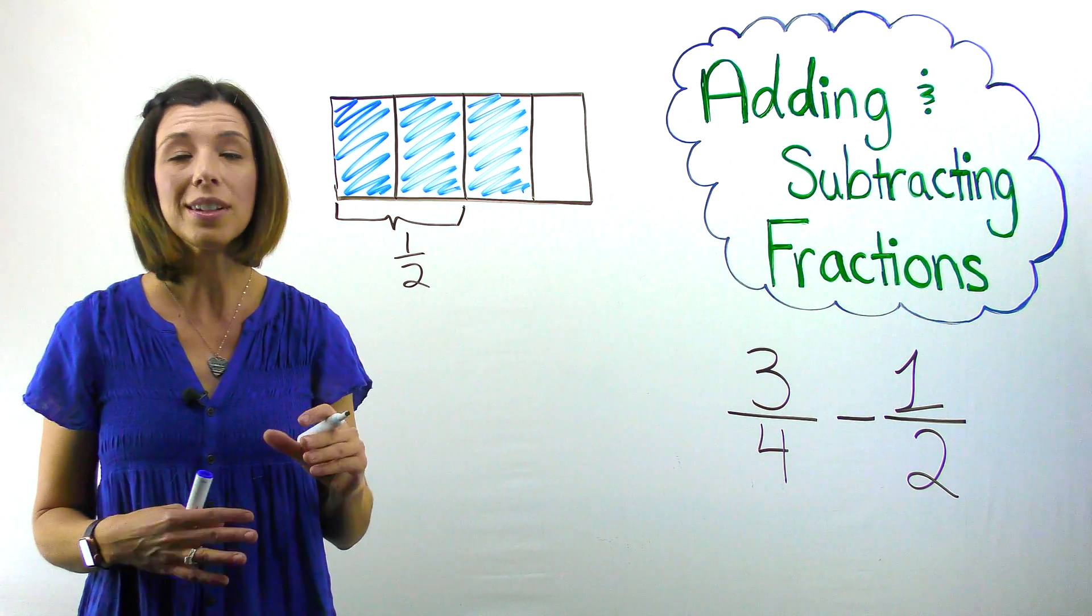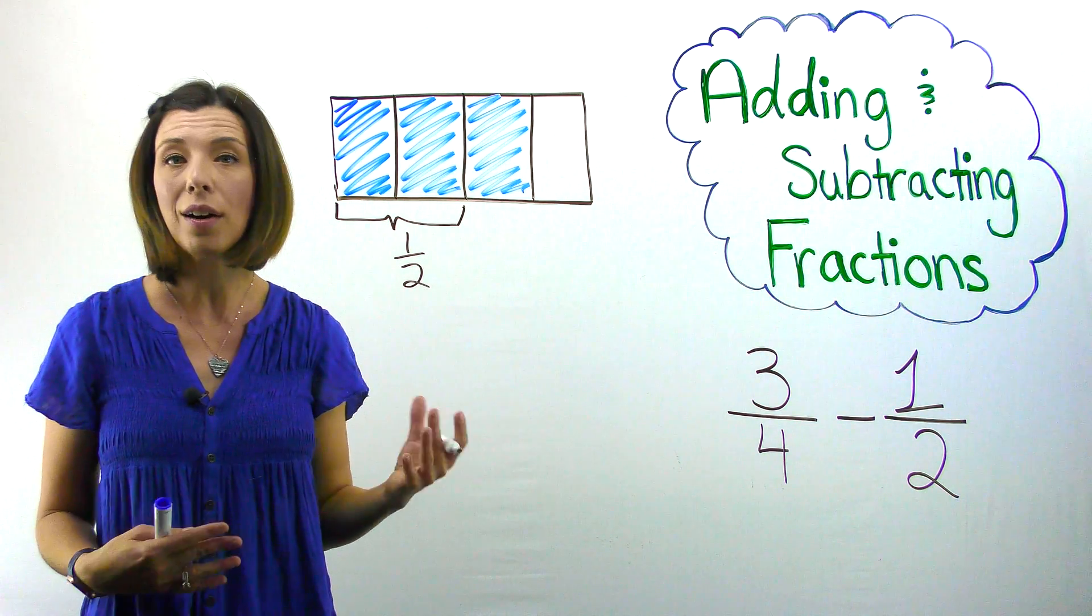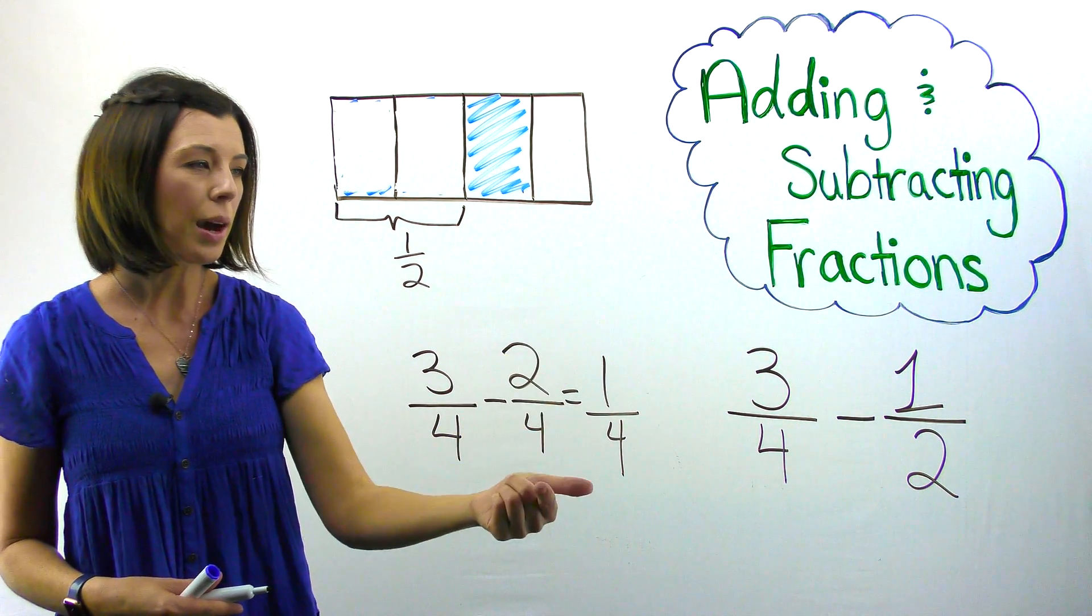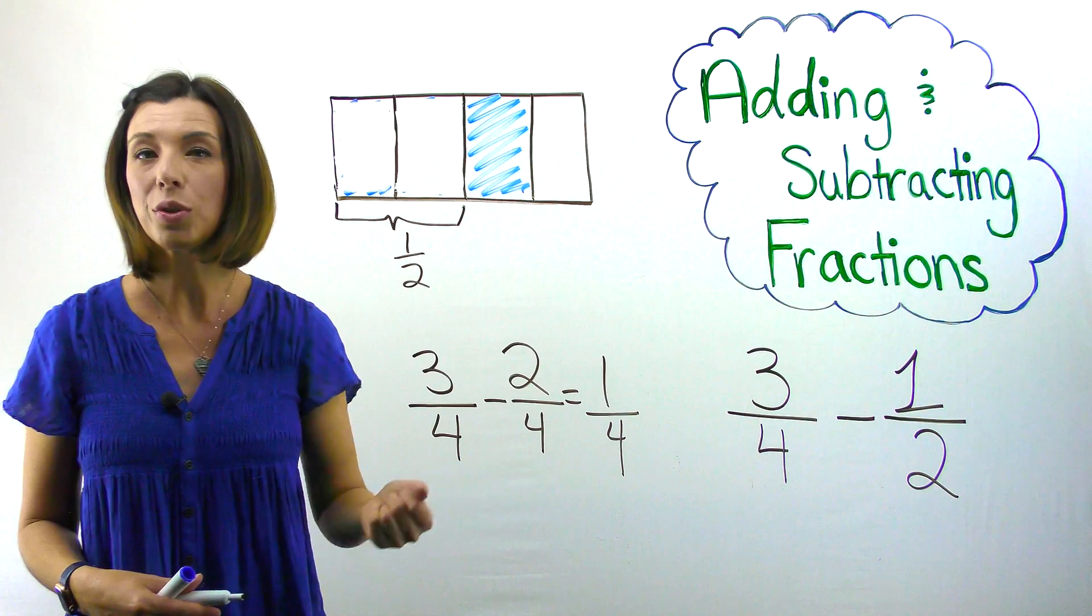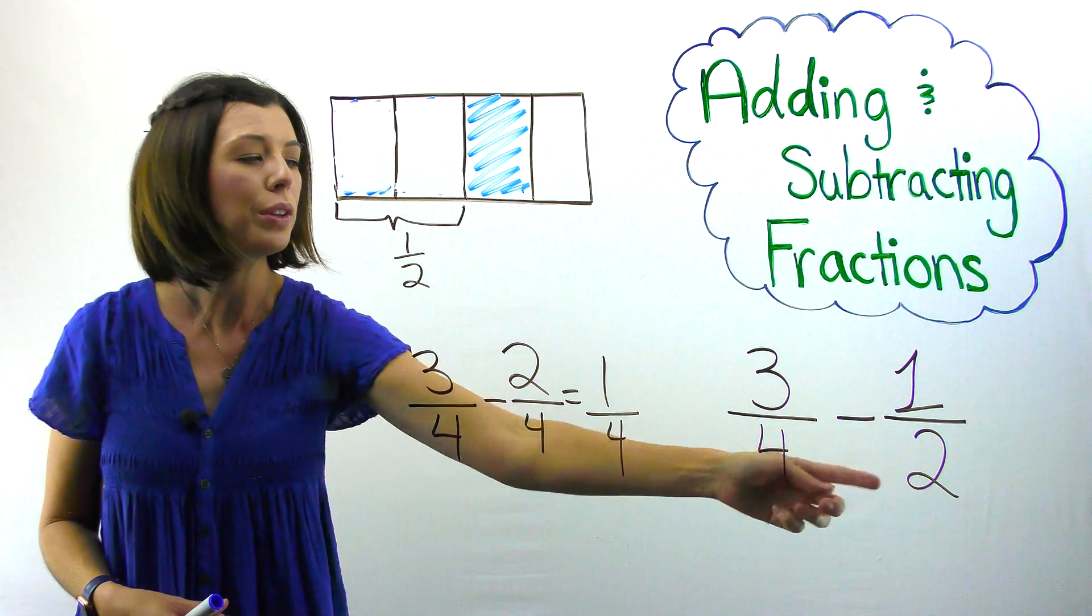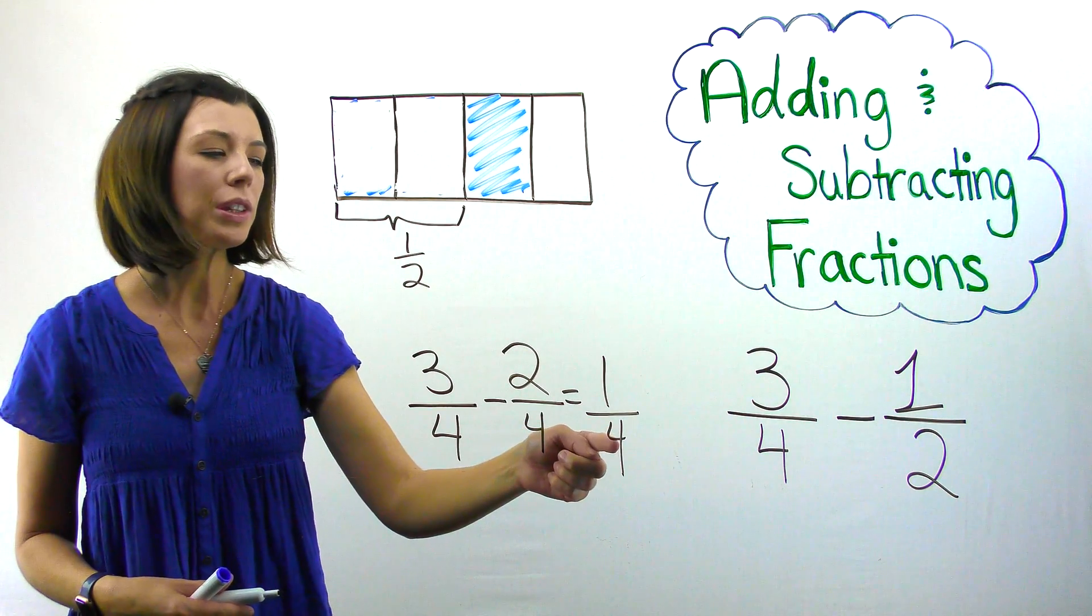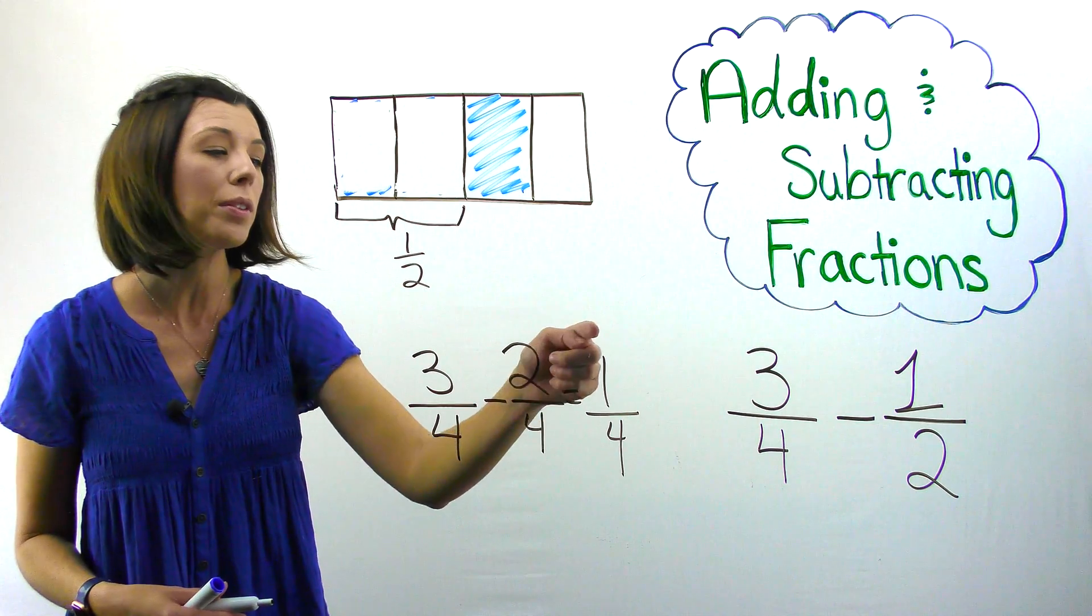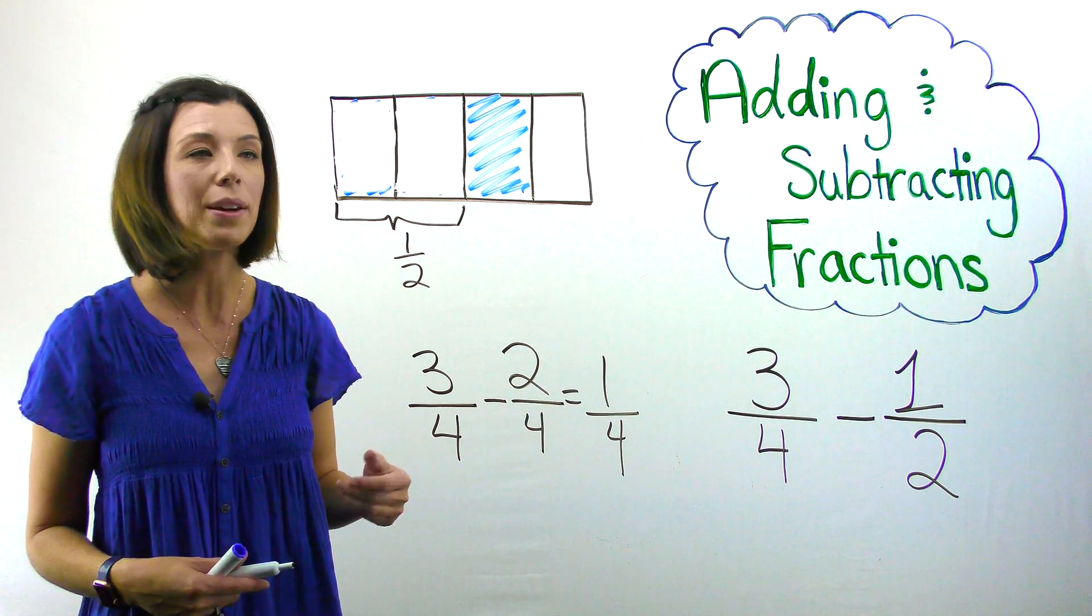Let's just double check this using the traditional method of making common denominators. You can see that when I make common denominators, I know that I can do fourths. So I have three-fourths minus two-fourths, which is the equivalent fraction to one-half, which leaves me with one-fourth. So three copies of a fourth minus two copies of a fourth leave me with one copy of a fourth.